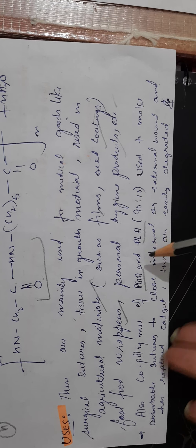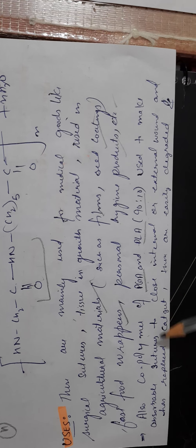Biodegradable polymers have many applications: tissue engineering scaffolds, agricultural materials like films and seed coatings, fast food wrappers, and personal hygiene products. The co-polymer of PGA and PLA combined in a 90:10 ratio can be used for making surgical sutures.